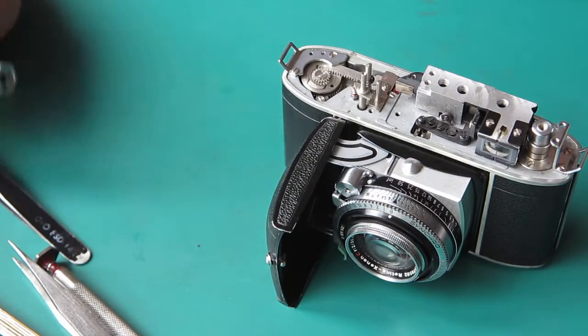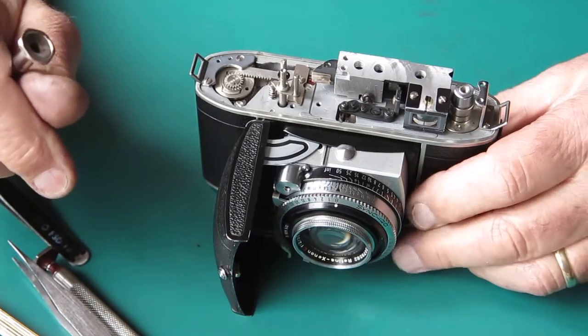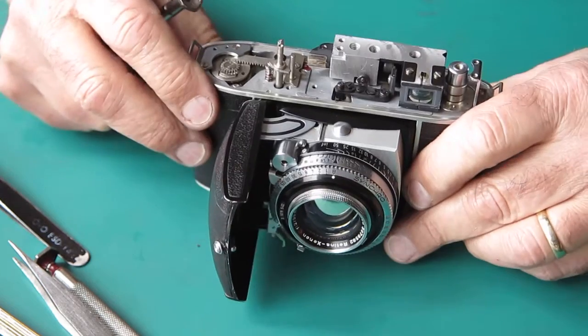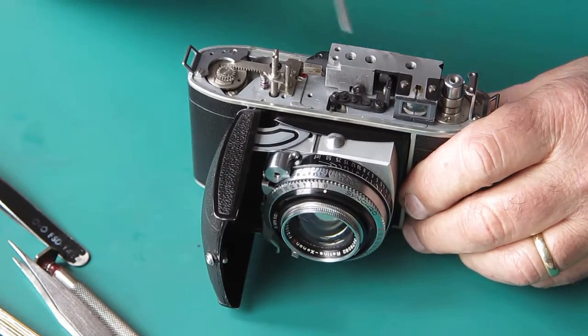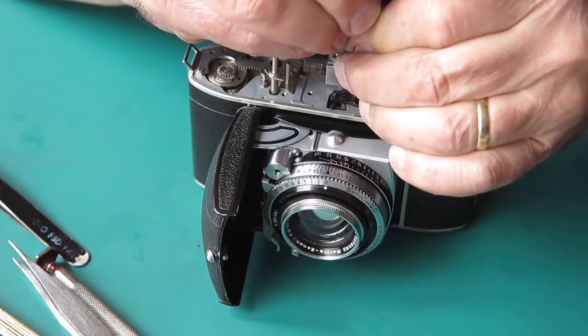Well, lady luck was with me today because the focus at the lens is absolutely spot on. So that mark that I saw that I assumed was probably from the screw head was from the screw head. So I've got to adjust my rangefinder position now. The horizontal alignment is not correct.